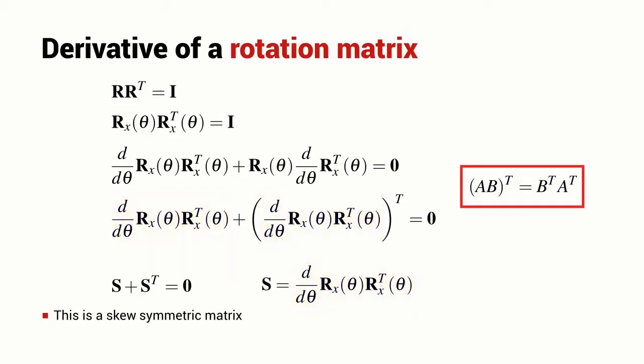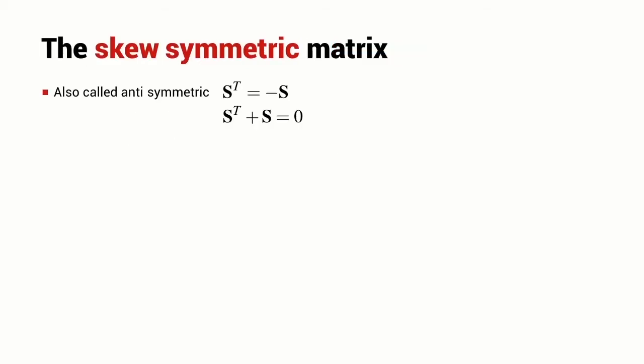The matrix S has an interesting property. If I add it to its transpose, the result will be equal to zero and this kind of matrix is referred to as a skew symmetric matrix. This kind of matrix is also sometimes referred to as an anti-symmetric matrix. These matrices are always singular, that is, their determinant is always equal to zero.